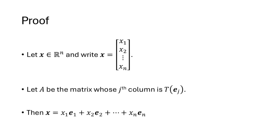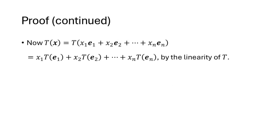Let x be any vector, and write x in terms of its entries as (x1, x2, ..., xn). Let A be the matrix whose columns are t(ej). We can decompose x in terms of the standard basis vectors as x1*e1 + x2*e2 + ... This is exactly what we were doing in example 1. Since t is a linear transformation, t(x) expands to x1*t(e1) + x2*t(e2) + ... using linearity.